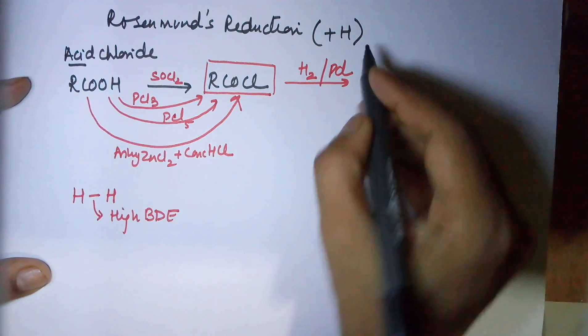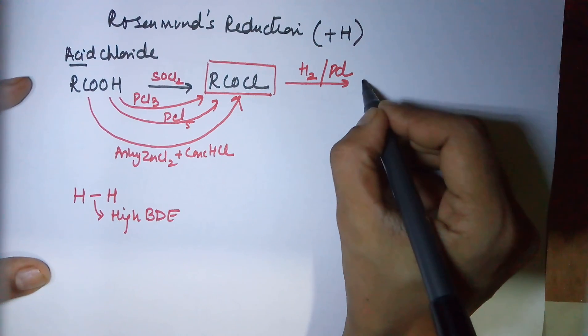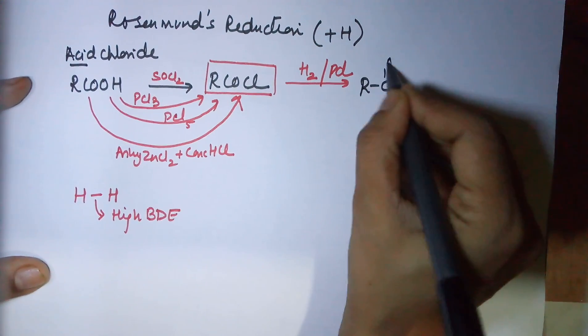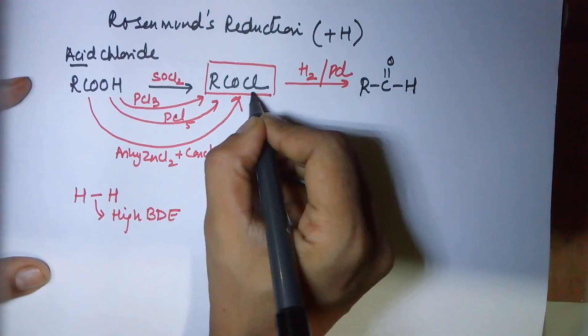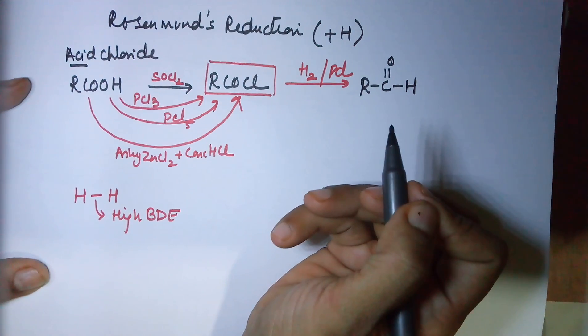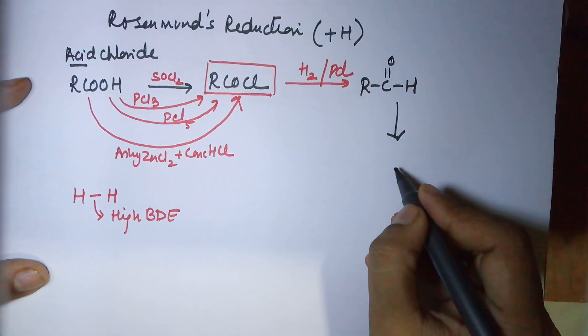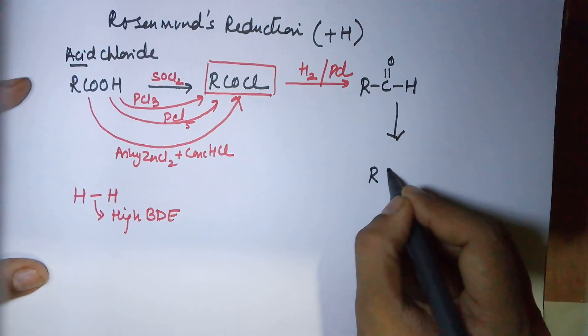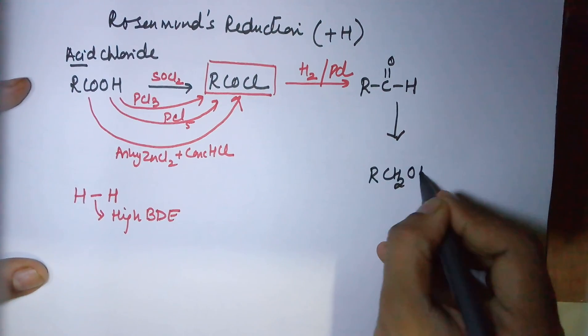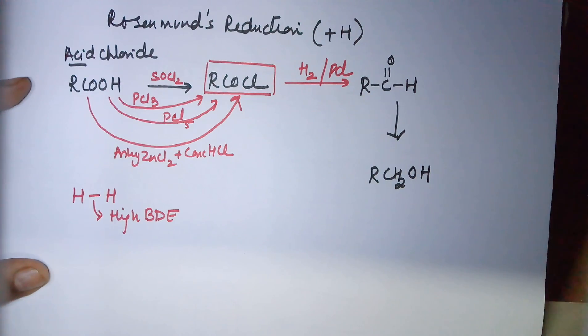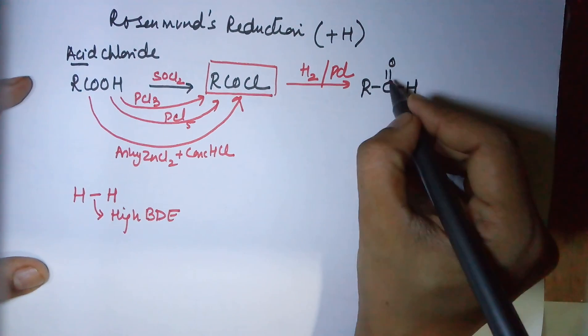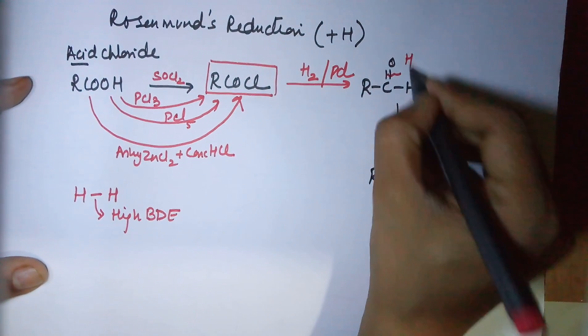This reaction leads to the formation of R-C double bond O and an H. The Cl is transformed into an H. Now since it is a reduction process, you can very well understand that this could further go to RCH2OH, where this double bond could break and the two hydrogens could have been given here.